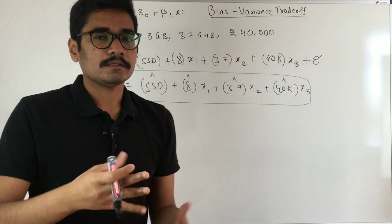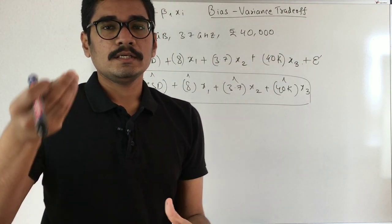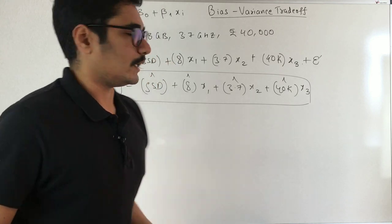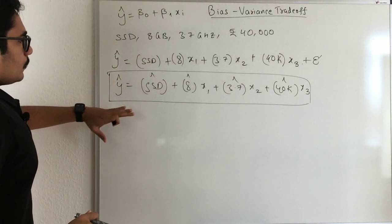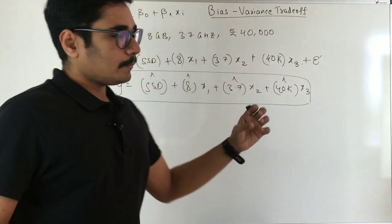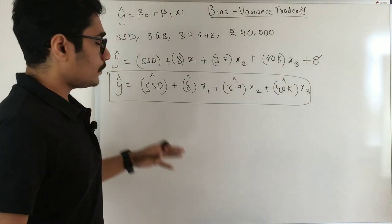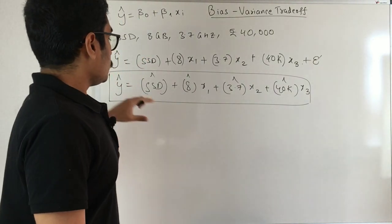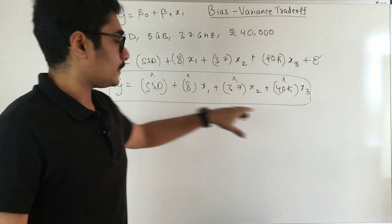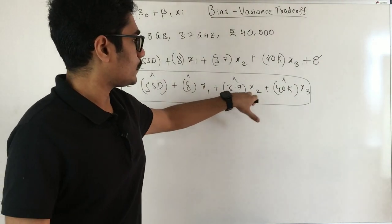For buying a new laptop ignoring the error, or this cap means you have estimated the error and you are incorporating it, something above or below. You know, in order to predict or to make your model predict, you need these many parameters: beta naught, beta 1, beta 2, and beta 3.